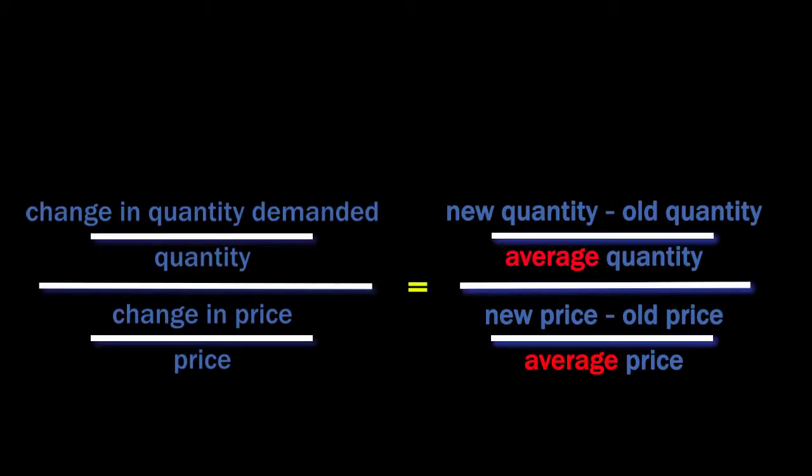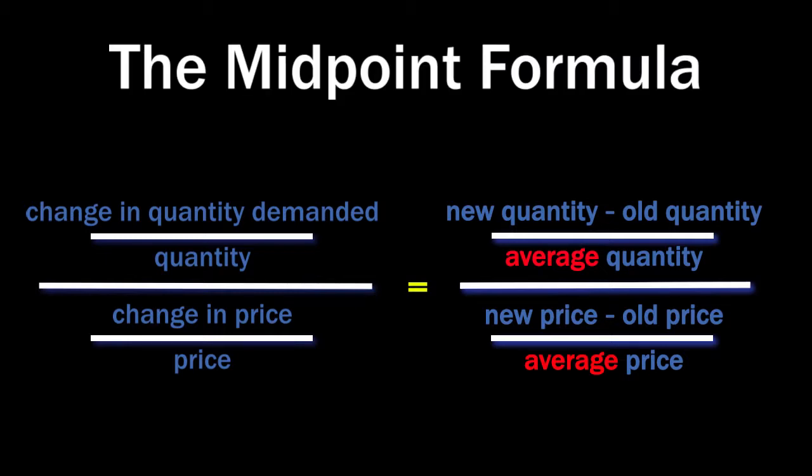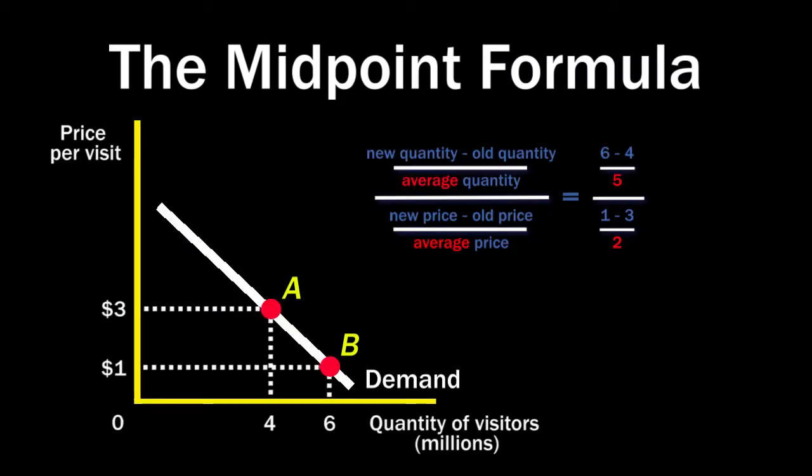The second approach is to calculate the quantity and price as the averages of the old and new quantities and prices. This is called a midpoint formula. The average quantity in our story is 5, and the average price is 2, so the elasticity between these points is 2 fifths, whichever direction you're going in.